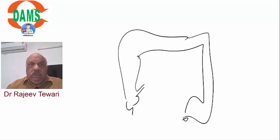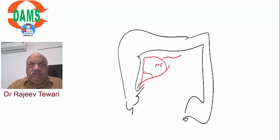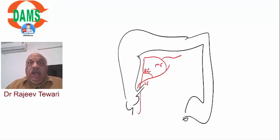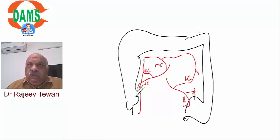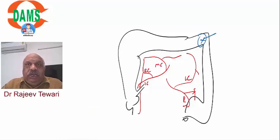To understand surgery, we have to know the blood supply. The superior mesenteric artery gives the middle colic, right colic, and ileocolic branches. The inferior mesenteric artery gives the left colic, sigmoidal, and superior rectal branches. The most ischemic part of the colon is the splenic flexure, called Griffith's point - it is a watershed area between the superior and inferior mesenteric arteries.